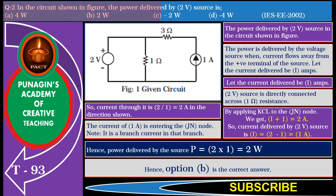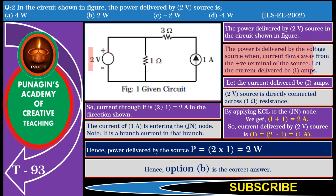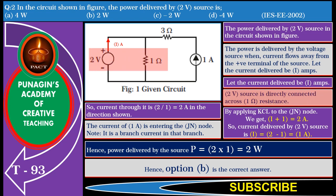Friends, this problem is the simplest one. We are required to find the power delivered by the 2 volt source in the circuit shown in the figure. We know that power is delivered by the voltage source when current flows away from the positive terminal of the source. Let the current delivered be I amperes. Let us find I — we find that the 2 volt source is directly connected across the 1 ohm resistance.